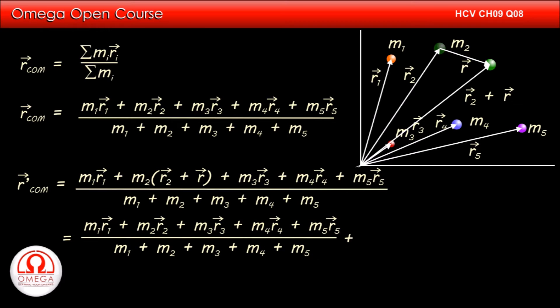vector r1 plus m2 vector r2 plus m3 vector r3 plus m4 vector r4 plus m5 vector r5 divided by m1 plus m2 plus m3 plus m4 plus m5 plus m2 vector r divided by m1 plus m2 plus m3 plus m4 plus m5.